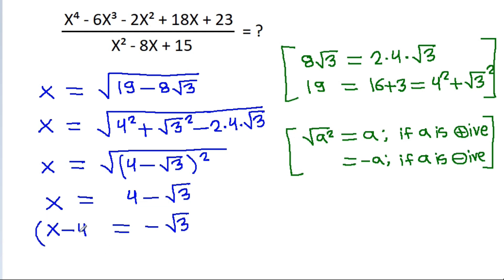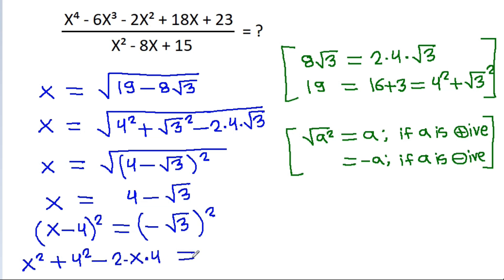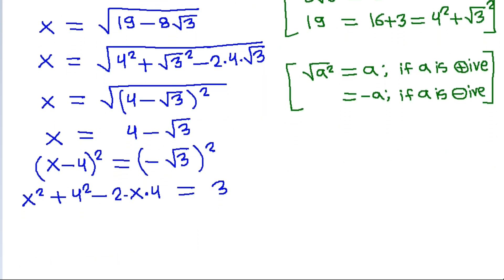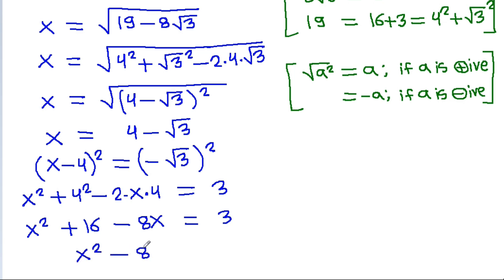And if we square both sides, then it is x square plus 4 square minus 2 times x times 4 is equal to minus square root of 3 squared, which is 3. And it is x square minus 16 minus 8x is equal to 3, and x square minus 8x will be equal to 3 minus 16, which is minus 13.